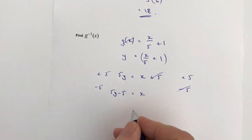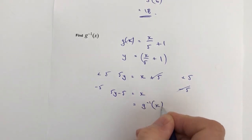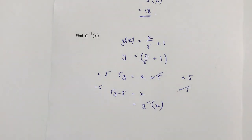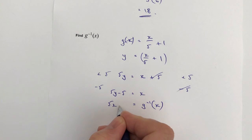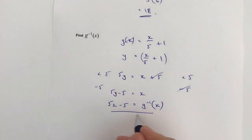So rather than having this x here, I'm going to change that to g to the minus 1 of x. And rather than having this y here, I'm going to make that 5x minus 5, and actually that's the answer to the question.